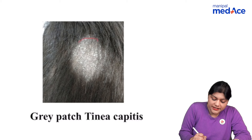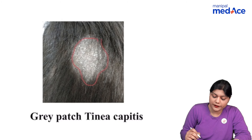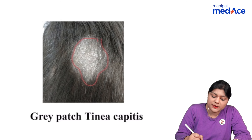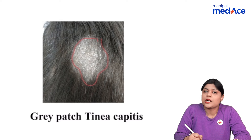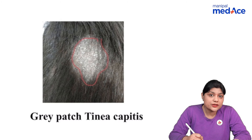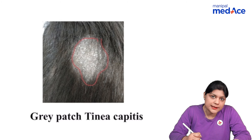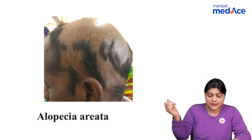This is a gray patch of non-scarring alopecia seen in patients of tinea capitis. The gray patch is caused by the ectothrix variety, where the spores are present outside the hair shaft, caused by Microsporum species. The hair breaks three to four millimeters above the scalp surface, and these also show fluorescence.